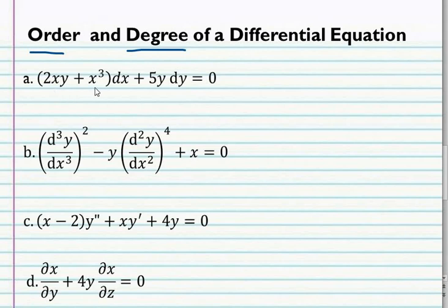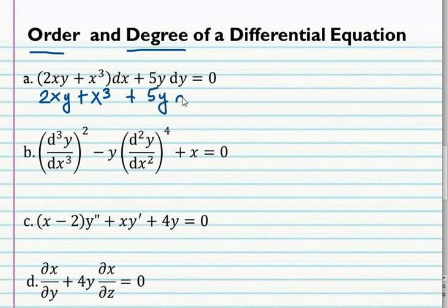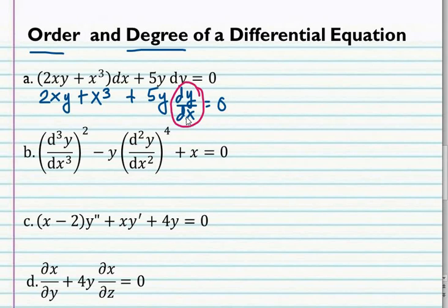For letter a, we have 2xy plus x cubed differential x plus quantity differential x plus 5y differential y. This is in the differential form and if we get the derivative form, it will be 2xy plus x cubed plus 5y, derivative of y with respect to x, is equal to 0. As you can see here, we have the derivative of y with respect to x that is in the first order.